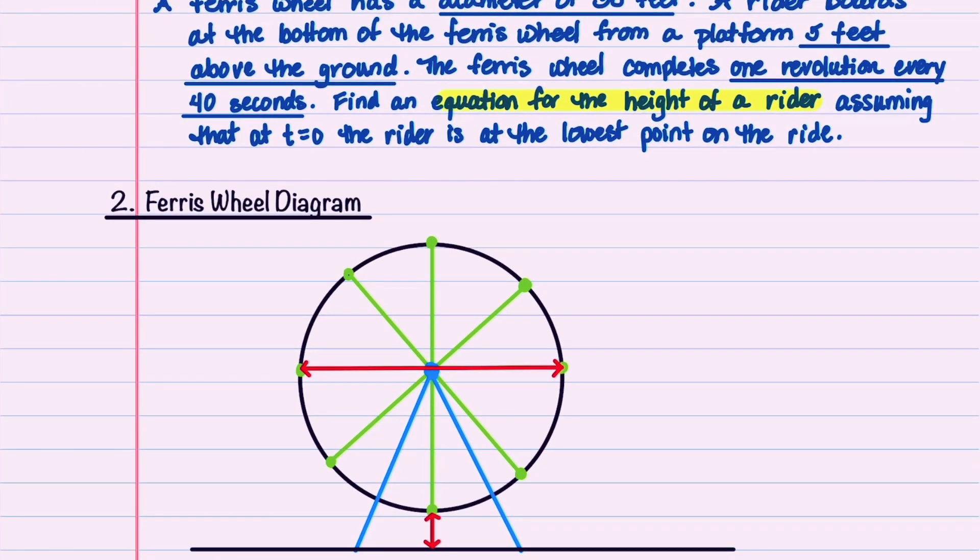Let's put this information into our diagram. The diameter is 30 feet. The distance between the Ferris wheel and the platform is 5 feet, and it takes 40 seconds to complete a revolution.